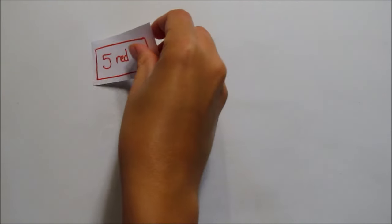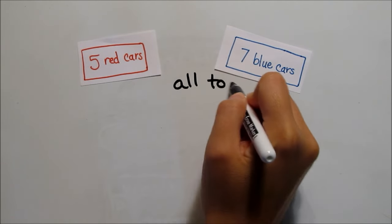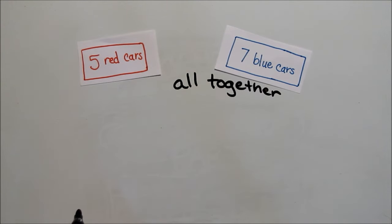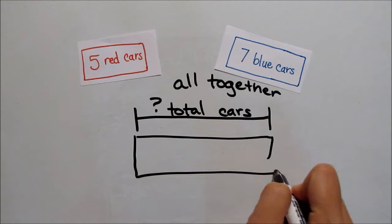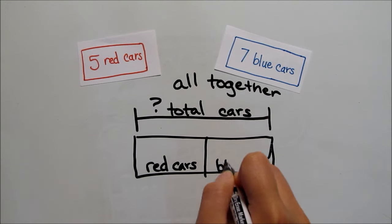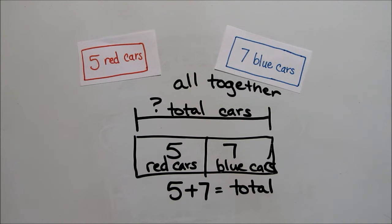Let's look at an example. If Billy has five red cars and seven blue cars, then we can use a strip diagram to find out how many cars he has altogether. The whole is his total number of cars. The pieces are red cars and blue cars. We can combine the pieces, the red and blue cars, to equal the total number of cars.